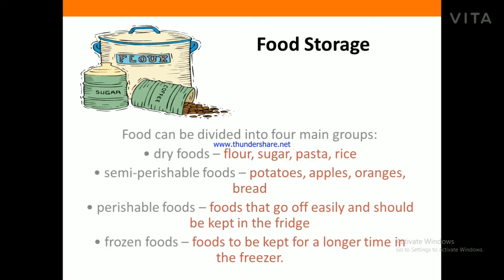Our third topic in the first section is food storage. Food can be divided into four main groups: dry foods, semi-perishable foods, perishable foods, and frozen foods. Examples of dry foods are dry fruits, flour, sugar, pasta, rice, dal, etc. Semi-perishable foods include potato, apple, orange, and bread.